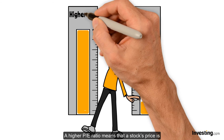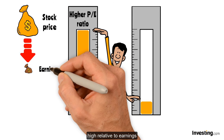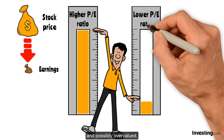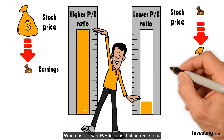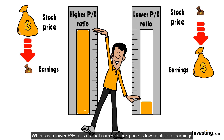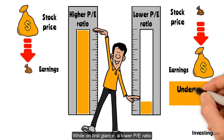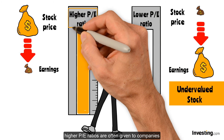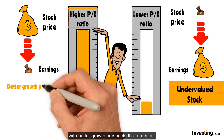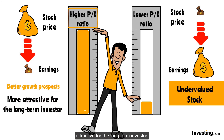A higher P/E Ratio means that a stock's price is high relative to earnings and is possibly overvalued, whereas a lower P/E tells us that the current stock price is low relative to earnings. While on first glance a lower P/E Ratio suggests a more undervalued stock, higher P/E Ratios are often given to companies with better growth prospects that are more attractive for the long-term investor.